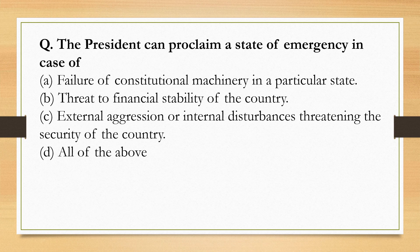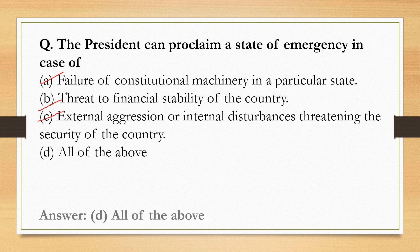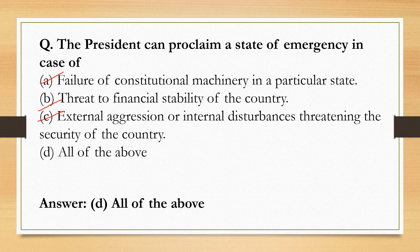The President can proclaim a state of emergency in case of: failure of constitutional machinery in a particular state; threat to financial stability of the country; or external aggression or internal disturbances threatening the security of the country. All of these are correct, so the correct option is all of the above — Option D.